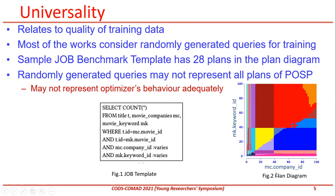In figure two, we can see that there are 28 plans. We can observe that most of the plans are concentrated near the axis, and the rest of the space is very sparse. This clearly suggests that the optimizer is very sensitive near the axis compared to the rest of the region. So clearly, to capture such behavior, we need to take care of this observation, which has definitely not been addressed in the literature earlier.